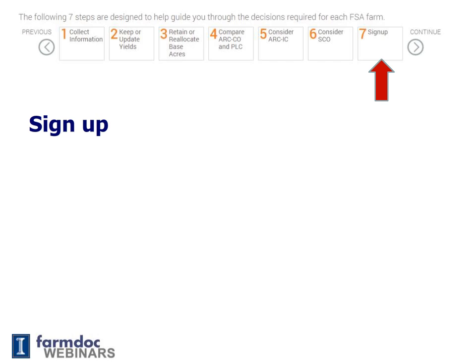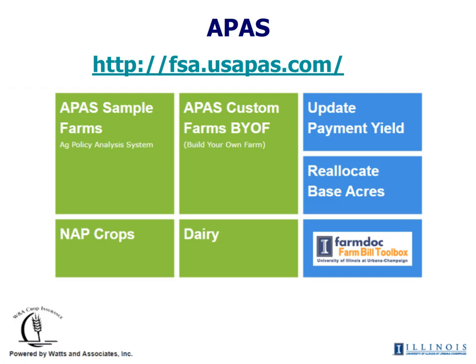In step seven, we finally talk about the sign-up process. One of the tools we will make extensive use of is APAS, developed by Watson Associates — the web address is listed on the page. APAS has a number of utilities we will use, including updating payment yields and reallocating base acres. In addition, the APAS sample farms contain estimates of PLC, ARC County, and ARC IC payments for all major agricultural producing counties in the U.S. This tool also has a build-your-own farm case if you want to drill down into the decision-making process.